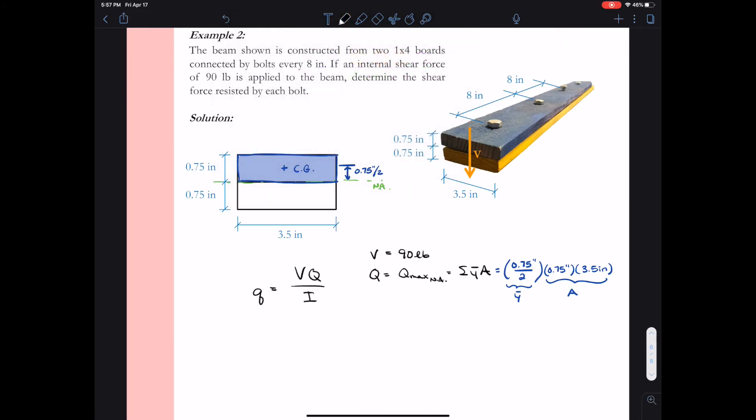So going ahead and adding those values to our calculation for Q. We can obtain that Q, the first moment of the area in this particular case, for just the blue board separated from the yellow board will have a value of 0.984375 inches cubed.